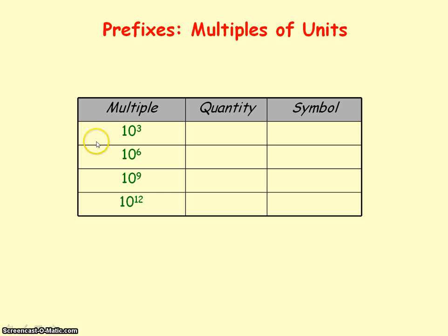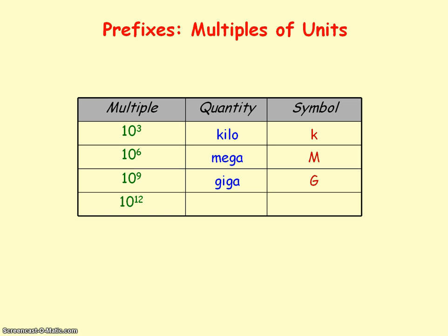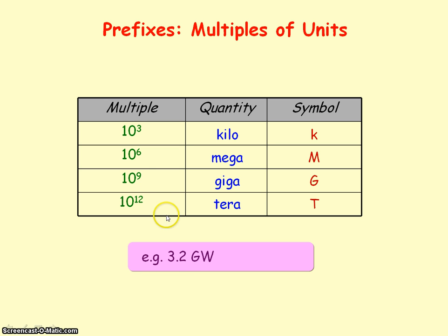For multiples of units: multiplying by 10 to the 3, a thousand times, is kilo. Multiplying by 10 to the 6, a million times, is mega. Multiplying by 10 to the 9 is giga, and 10 to the 12 is tera. For example, to convert 3.2 gigawatts into SI units, it would be 3.2 multiplied by 10 to the power of 9.